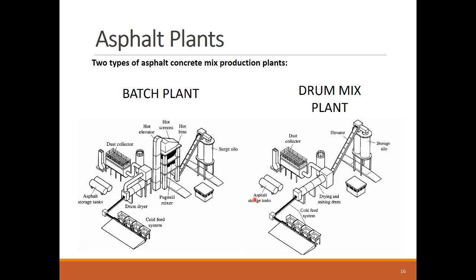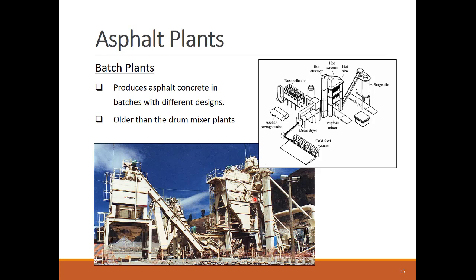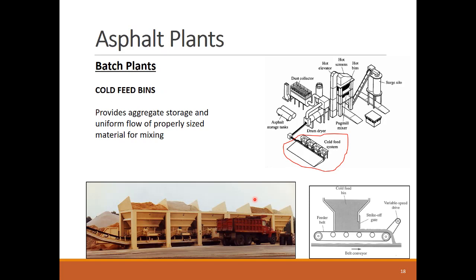There are two types of asphalt concrete mix production plants. Let's check the first type: the batch plant. Asphalt batch plants are considered the traditional designs of mixing plants, where the mix is done in batches of set proportions produced through the plant. The cold feed bins hold the different coarse, medium, and fine aggregates ready to be mixed according to the mix design. A belt conveyor runs under the bins to collect the aggregate from the different bins and deliver them to the drum dryer.